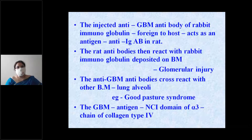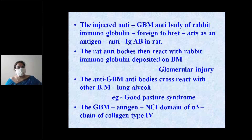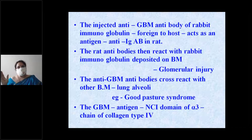The rat antibodies produced against the rabbit immunoglobulin reacted with that anti-glomerular basement membrane antibody of the rabbit, got deposited on the glomerular basement membrane, causing glomerular injury. These antibodies were deposited in a diffuse linear pattern, as appreciated on immunofluorescence.